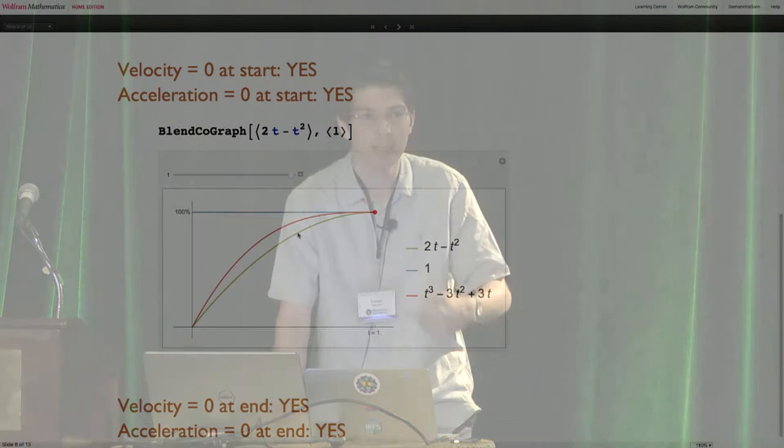And then more and more derivatives would be 0. So the velocity, acceleration, the jolt as it's sometimes called and so on. We can also do the opposite and end as smoothly as we want. But now the beginning and the end just basically look like t.